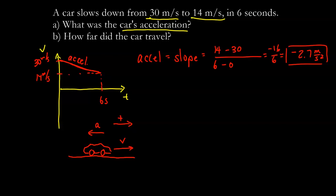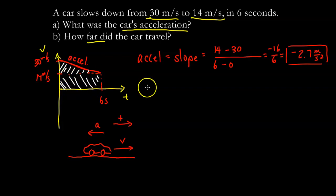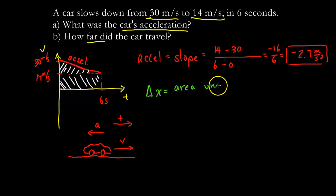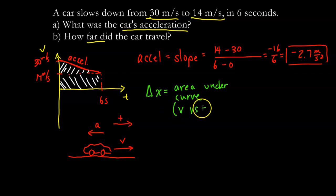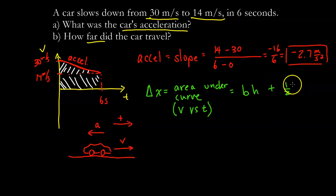For part B — how far did the car travel — we look at the area under the curve. The shape here has a rectangle on the bottom and a triangle on top, so we'll add those areas together. The displacement equals the area under the velocity versus time graph; this applies specifically to velocity versus time graphs.